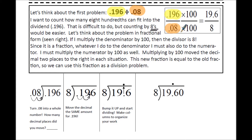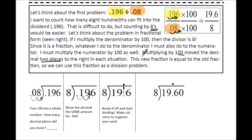Since I want to be counting by 8s to see how many fit in there, I'm going to take 8 hundredths and multiply by 100 to get 8. If I multiply the denominator by 100, then the divisor is 8. Since it's a fraction, whatever I do to the denominator, I must also do to the numerator. So I must multiply the numerator by 100 as well. Multiplying by 100 moves the decimal place two places to the right, so I get 8 and 19.6. This new fraction is an equivalent fraction and an equivalent division problem.